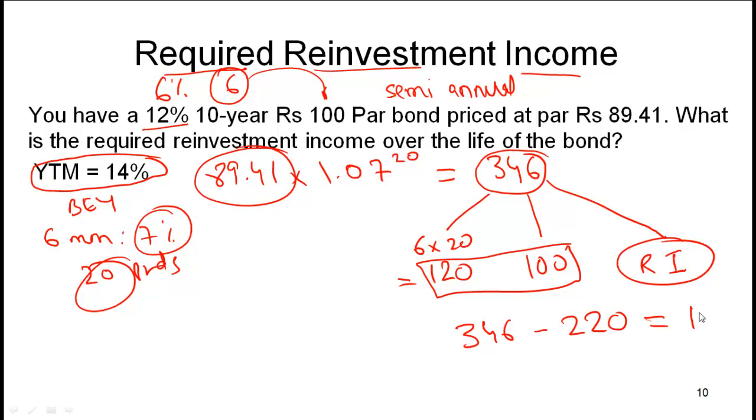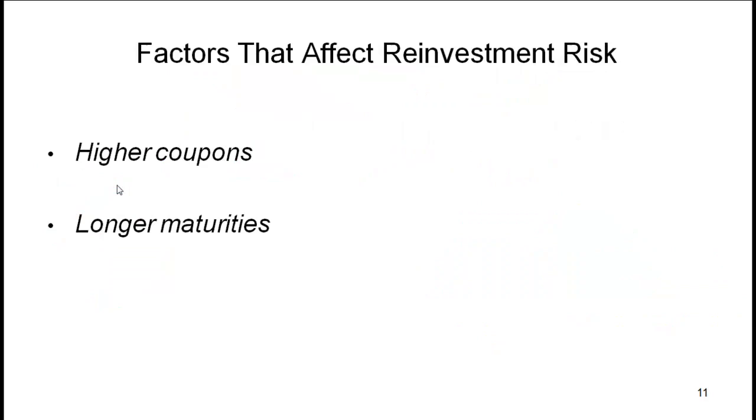So we will have 346 minus 220 which is equal to 126. So the reinvestment income needs to be 146 in order for you to make the YTM of 14%. Now let's talk about factors that affect reinvestment risk.